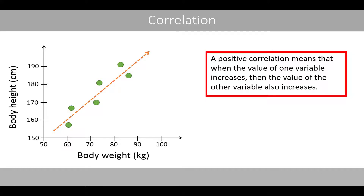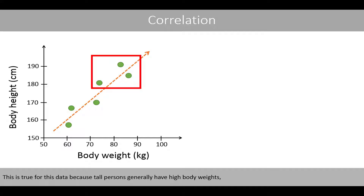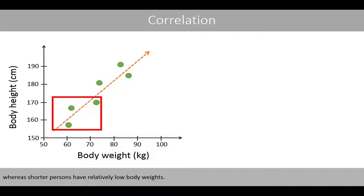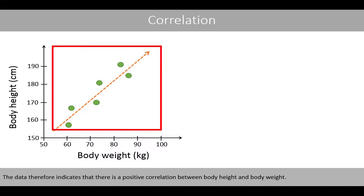A positive correlation means that when the value of one variable increases, then the value of the other variable also increases. This is true for this data because tall persons generally have high body weights, whereas shorter persons have relatively low body weights. The data therefore indicates that there is a positive correlation between body height and body weight.